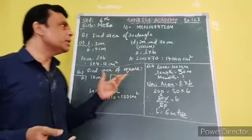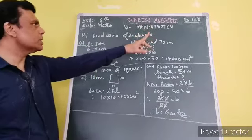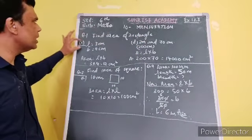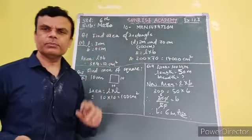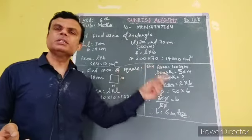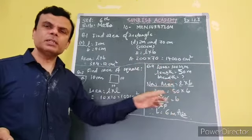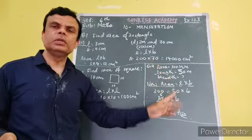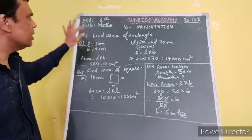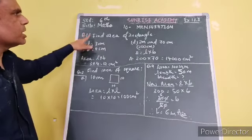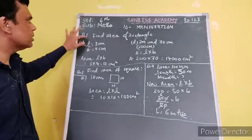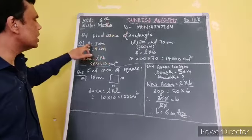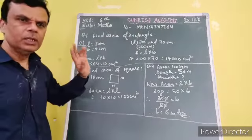I will send you three or four sums to solve in this video. Now, the first sum, question number 1 from NCERT textbook exercise 10.3, Mensuration chapter, asks you to find the area of a rectangle which has given length and breadth.